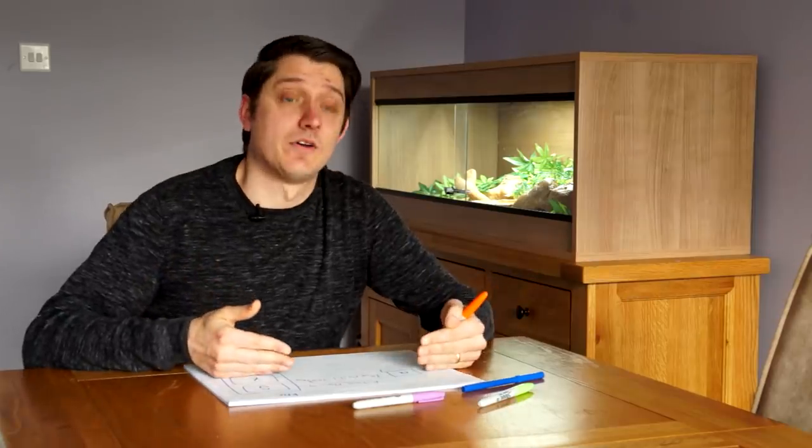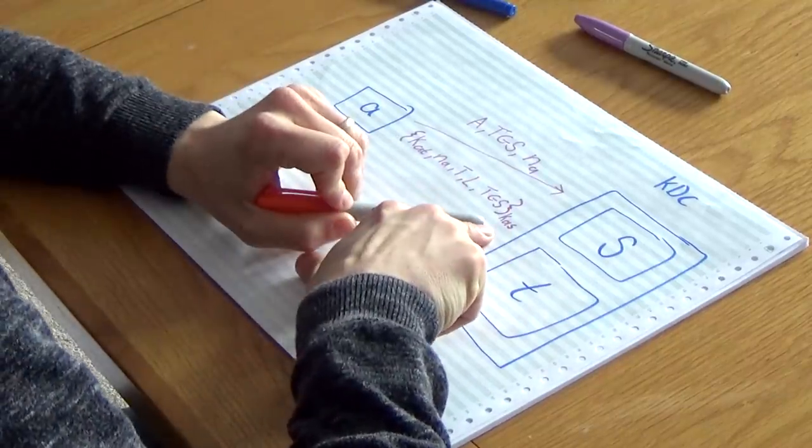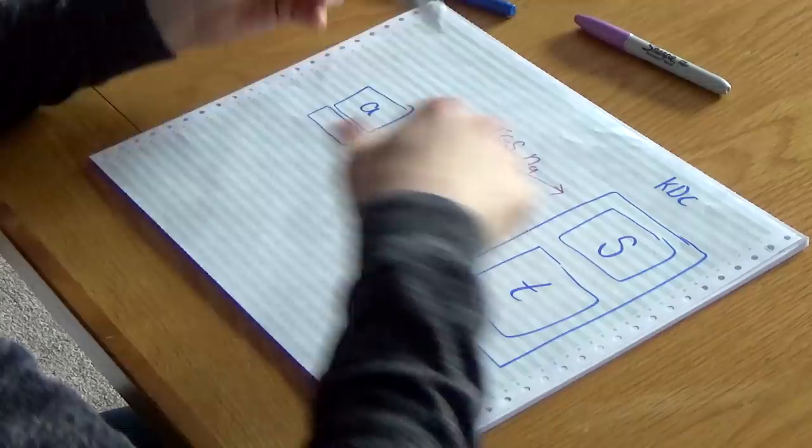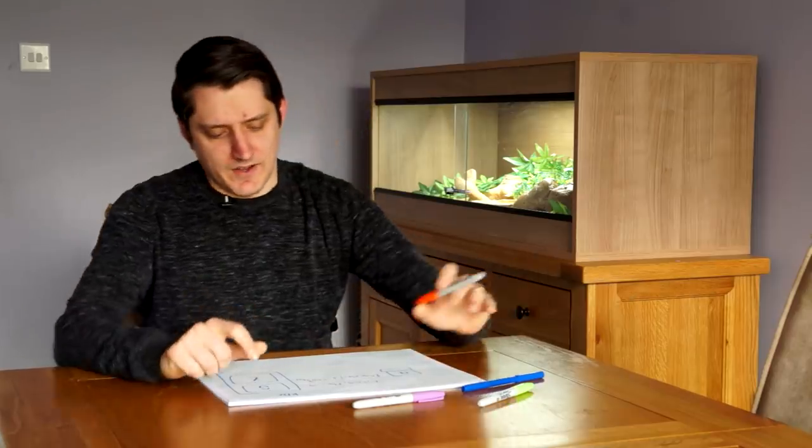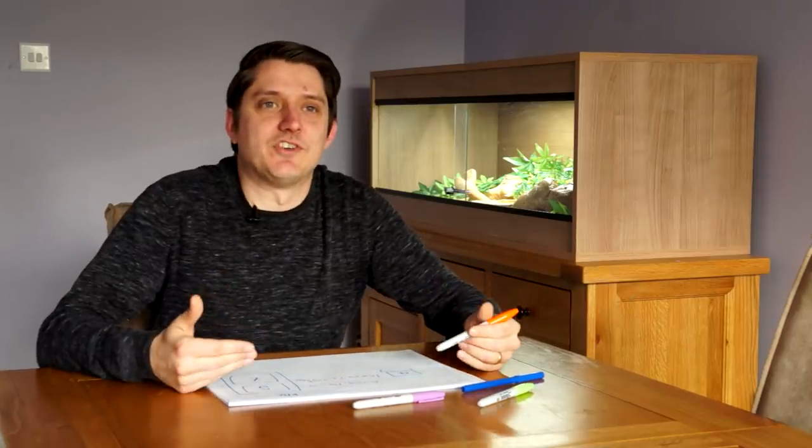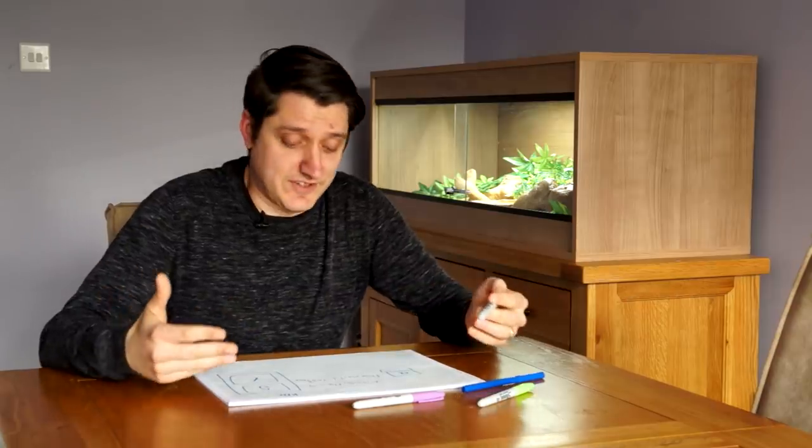What I can do now is I can decrypt this message using K_AS, because that's derived off my password, and I can read this session key and then I can use it to talk to T. The problem is that T doesn't have this session key. This is new, this is brand new, this key.